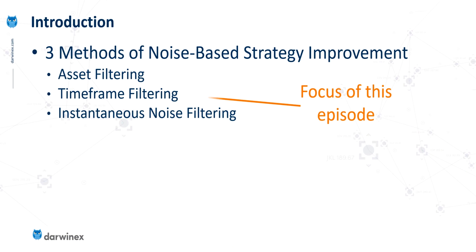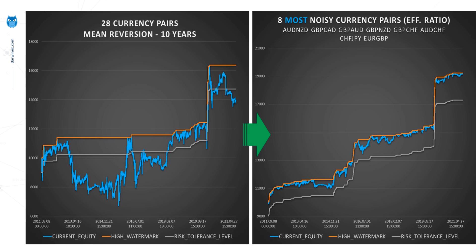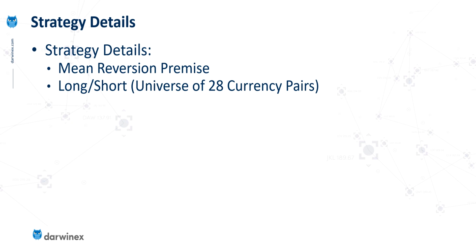Time frame filtering is the second of the techniques that I covered previously, and this time we get to see the results of this particular technique. As a quick reminder of the kind of improvements we saw with asset filtering — on the left we have a mean reversion strategy traded on 28 currency pairs initially, where we were experiencing drawdowns in the region of 35 to 40%. But look what happened when we started to trade just the eight currency pairs most suited to this type of mean reversion strategy in terms of noise. The improvements are significant. It's exactly the same strategy that I've used in this time frame research, and it's based on a mean reversion premise.